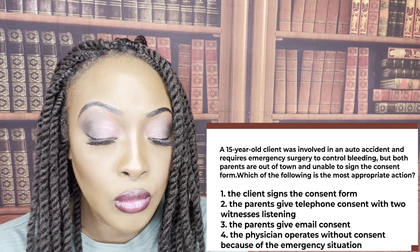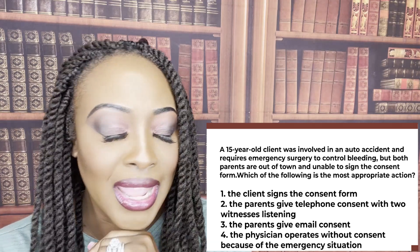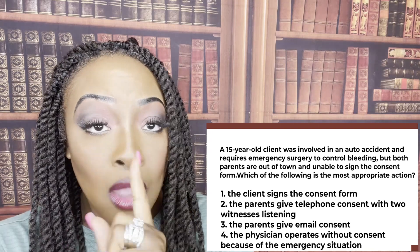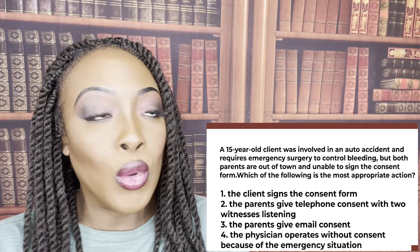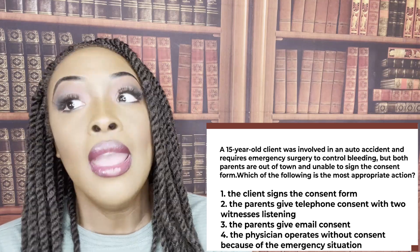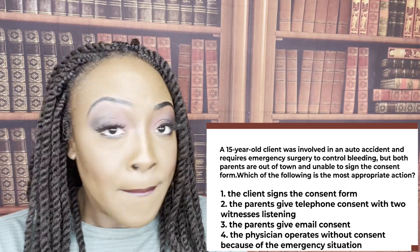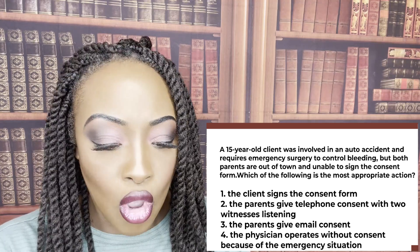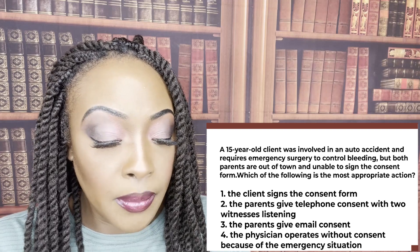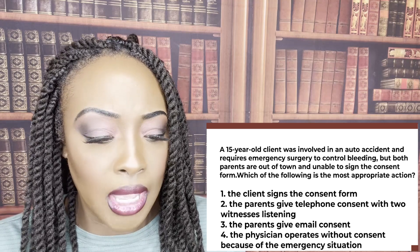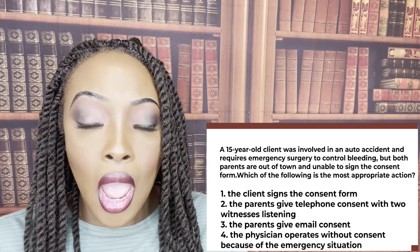The parents give telephone consent with two witnesses listening. In an emergency situation, you only need one parent's consent, not both — obtained over the telephone with another witness. Because it's an emergency, technically we have what's called implied consent — if the patient will die without surgery, consent is implied. We're not choosing number four only because number two is available; if two was not an option, four would have been correct. Choice one is wrong because the client is a minor. Choice three is wrong because you cannot verify identity via email.